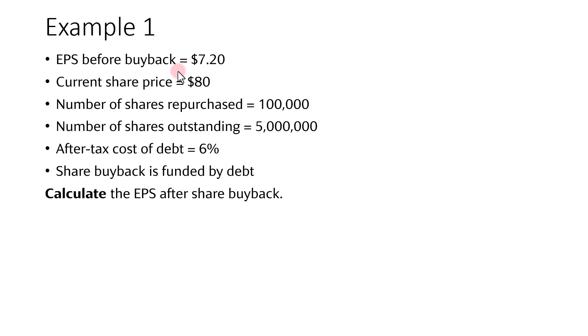In this series of examples, I'm going to show you how to calculate the EPS after share buyback. Before the share buyback, the company's earnings per share or EPS is $7.20, and the company plans to buy back 100,000 shares at the current share price of $80. The company has a total of 5 million shares outstanding.